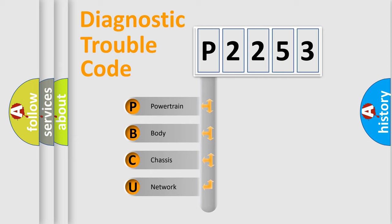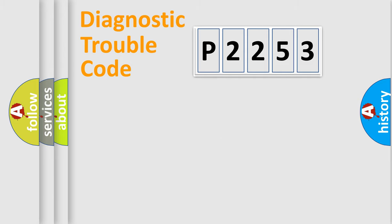We divide the electric system of automobile into four basic units: Powertrain, body, chassis, and network.